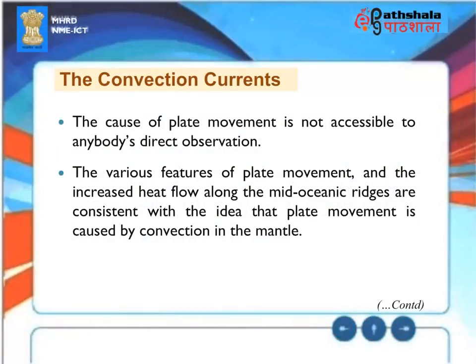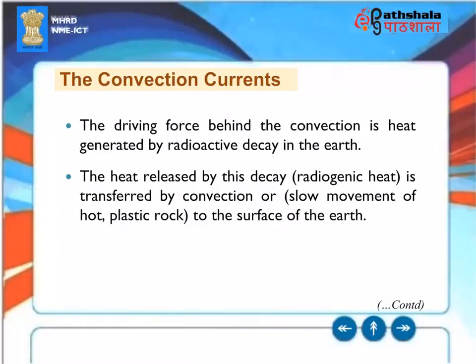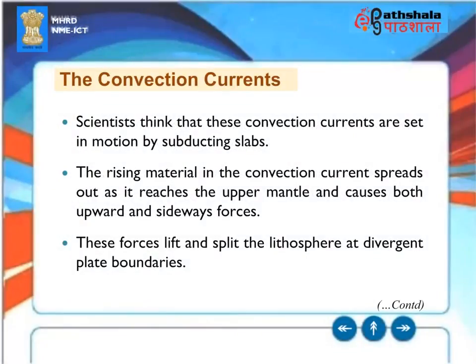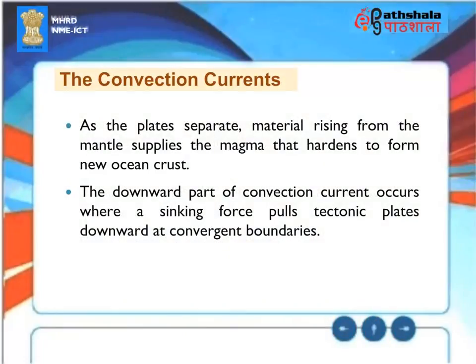The cause of plate movement is not accessible to direct observation. The various features of plate movement and the increased heat flow along mid-oceanic ridges are consistent with the idea that plate movement is caused by convection in the mantle. The driving force is heat generated by radioactive decay in the Earth — this radiogenic heat is transferred by convection, or slow movement of hot plastic rock, to the surface. Scientists think convection currents are set in motion by subducting slabs. The rising material in the convection current spreads out as it reaches the upper mantle, causing both upward and sideways forces that lift and split the lithosphere at divergent plate boundaries. As the plates separate, material rising from the mantle supplies magma that hardens to form new ocean crust.